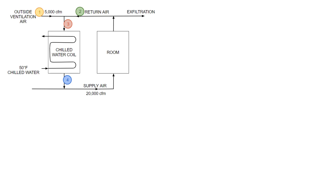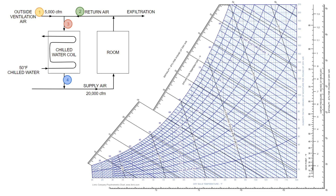Here's the same diagram as in the original problem statement, except with the bypass damper omitted since it's closed. I've labeled states one through four: the outside air in yellow, the return air in green, the mixed air which enters the coil in red, and the supply air which leaves the coil in blue. Let's plot each of these points on the psychrometric chart and show the mixing process and the cooling process.